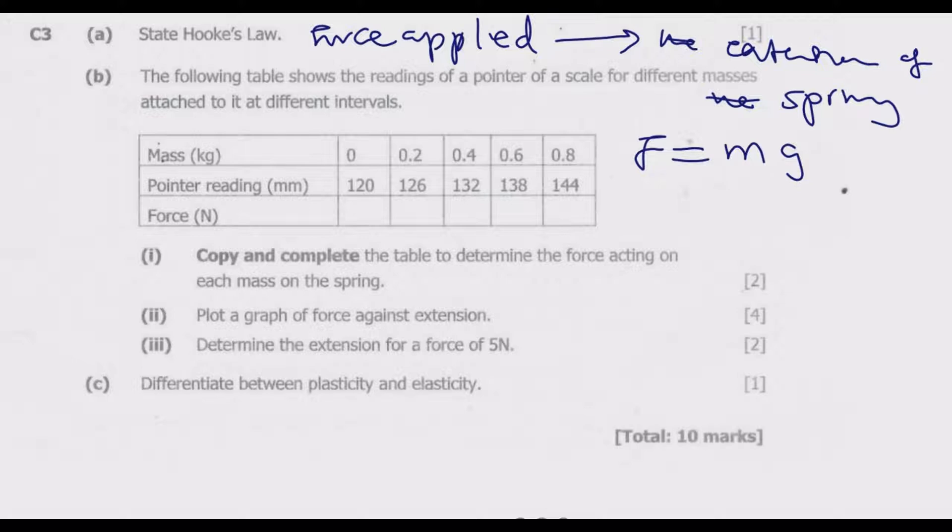To find force for the first mass of zero, it's basically zero times 10 which will give us zero. For the next one it's 0.2 kg multiplied by 10 which will be 2 newtons. Then the next one will be 0.4 times 10, which is 4, then 6, then 8 which is 0.8 times 10. That's the force case.